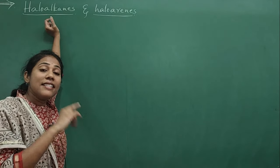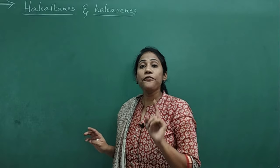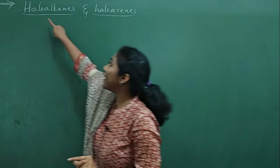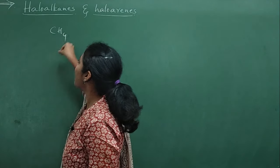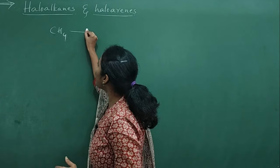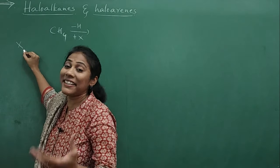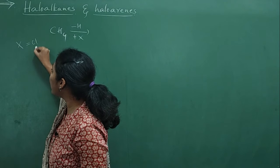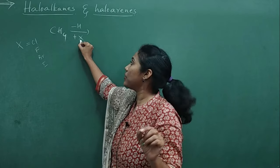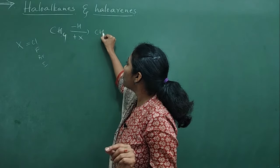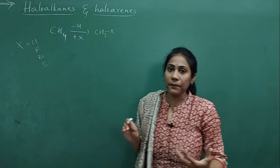We know what we mean by alkanes — they are saturated hydrocarbons. In an alkane, if I replace one hydrogen atom with a halogen atom, then it becomes a haloalkane. For example, methane is CH4. I remove one hydrogen and add one halogen — X can be any halogen atom, it can be chlorine, bromine, or iodine. So it gets converted into CH3X, where the fourth bond is with X. So we have replaced hydrogen atoms with halogens — such compounds are called haloalkanes.